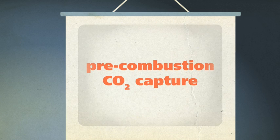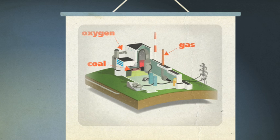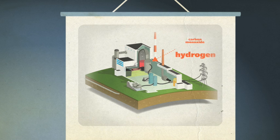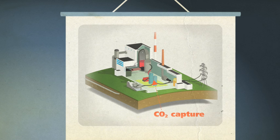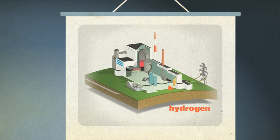In pre-combustion capture, coal is combined with oxygen to create a gas. It's made up of carbon monoxide and hydrogen. Adding water to this gas causes a reaction. It converts the carbon monoxide into hydrogen and CO2. The CO2 can be safely captured, while the hydrogen is burned to drive a turbine and generate electricity. It can even be used to feed fuel cells for cars.